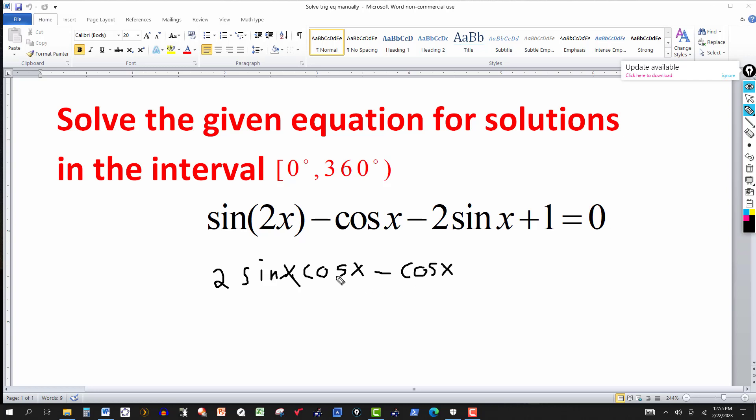And then I can see that I can factor from just these two terms, I can factor out a cosine. And over here, what I'm going to do is I'm going to factor a negative out of this. So this will give me twice the sine of x minus 1 equal to zero.